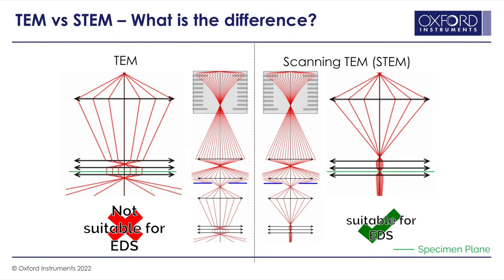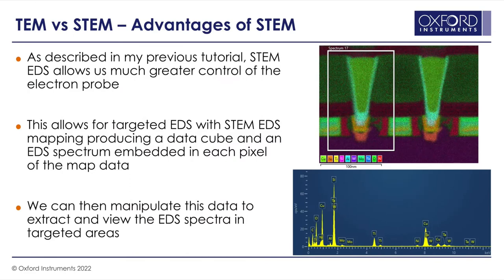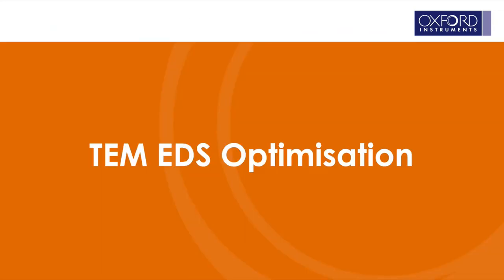Here's a basic example showing that semiconductor device we showed previously. This is a spectral image, which means that for each pixel in that image we have an associated EDS spectrum. From this we can extract data — for example, spectrum 17 extracted from a specific area pulls out all of the EDS data from within that region, gives us a spectrum showing what elements are present there, and allows us to really assess and interrogate our data. That covers the basics of TEM versus STEM.